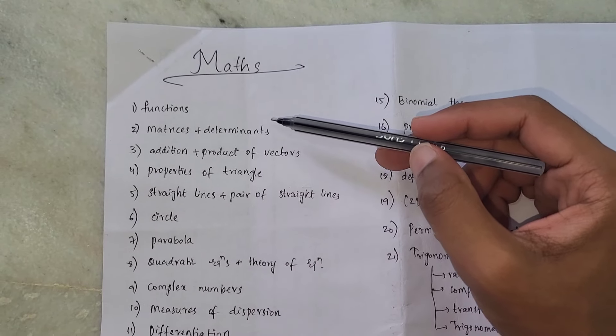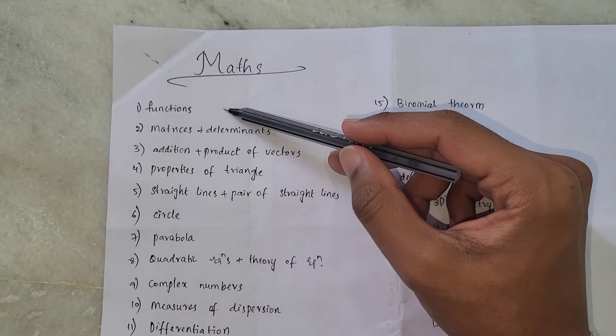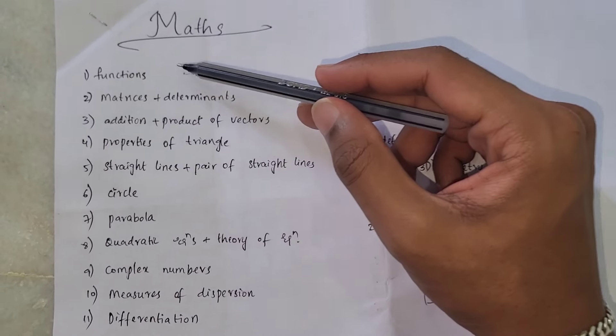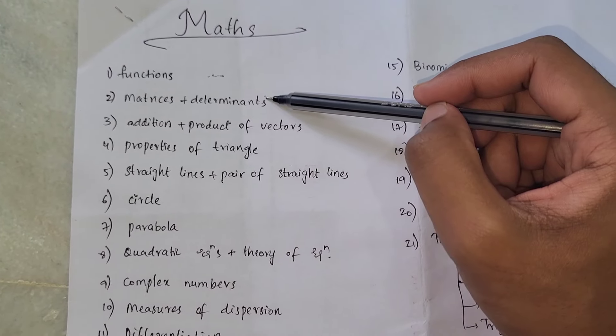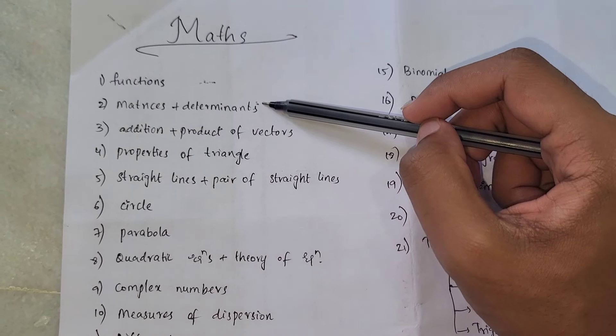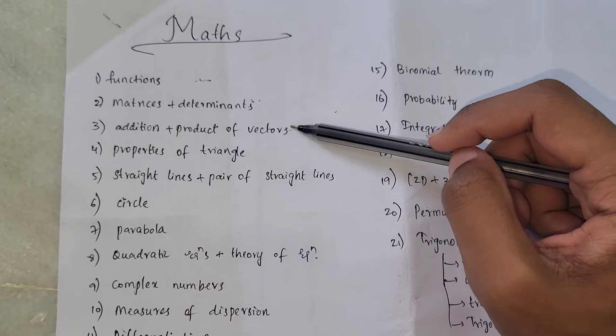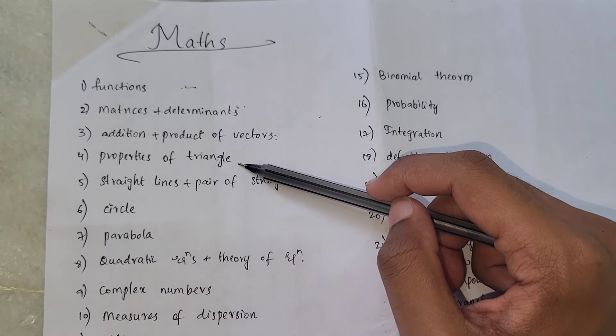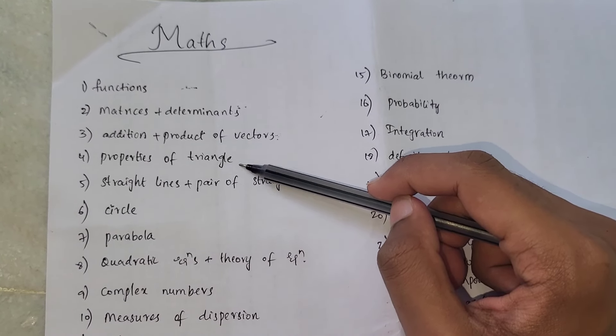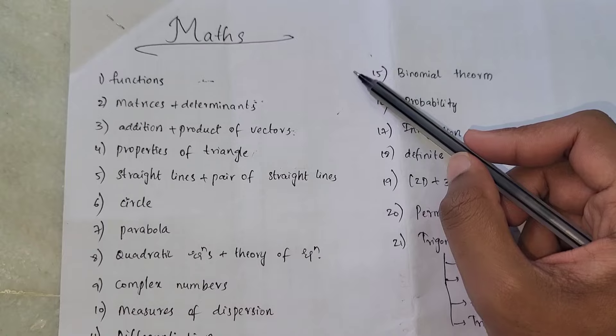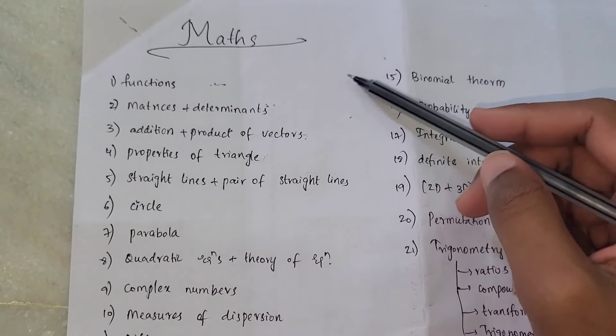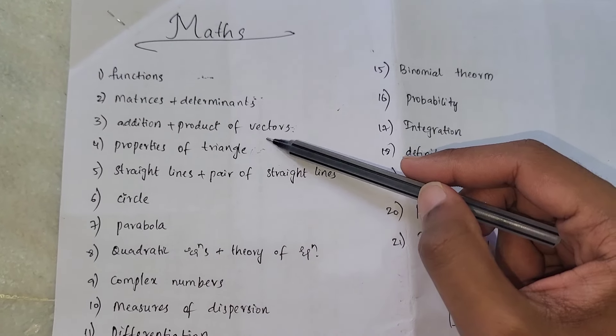The first chapter is functions. Functions are very important. You have to expect easily 3 to 4 marks, so do not neglect this chapter. Next, matrices and determinants are very easy, a good chapter. Next, vectors - one of the most important. Next, properties of triangles. This is a little easier, 4 marks. In trigonometry, formulas apply but there are some mistakes. But still, properties of triangles are also a good chapter to do.